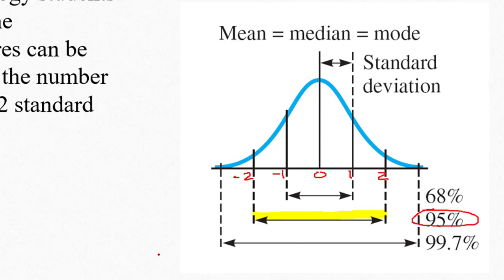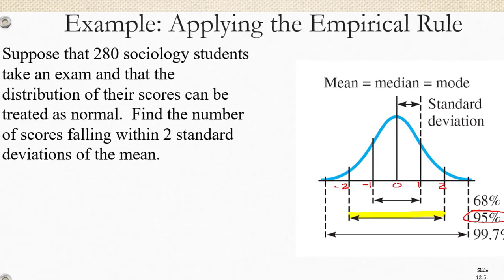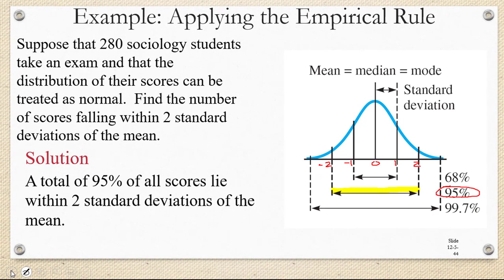Well, if 95% of the data is going to be within two standard deviations of the mean, then 95% of those 280 sociology students are going to have exam scores in that range. To find 95% of 280, we're going to multiply 0.95 times 280, which is 266 scores.